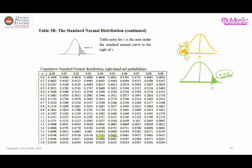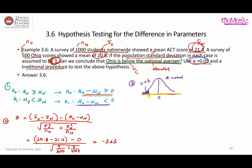It doesn't matter which you pick. If you pick z = 1.65, then the probability of z less than or equal to 1.65 is 0.05. Since the distribution is symmetric and the area on the right is 0.05, the area on the left is also 0.05, so the critical value on the left side is negative 1.65.